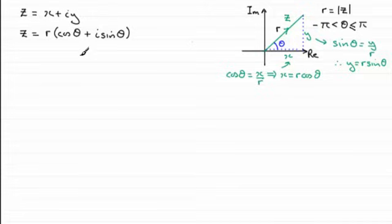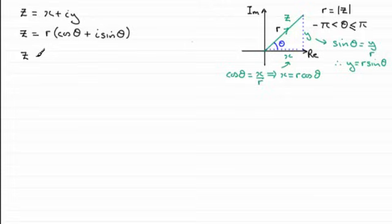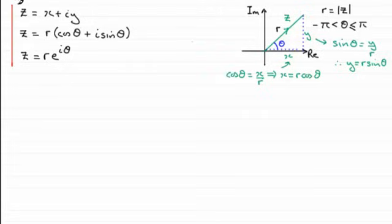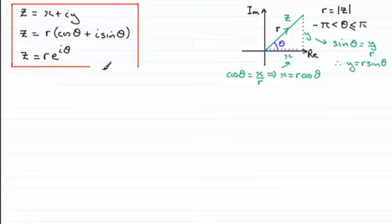There's another form we can use for complex numbers, which is very useful when doing harder work on complex numbers. It is that Z can be expressed as R e to the power i theta. I'm going to show you how we get this result — not that you necessarily have to prove it — but I will show it in this video. Certainly learn this result. Remember, E is the constant that you should be familiar with; E is roughly 2.718 and so on.